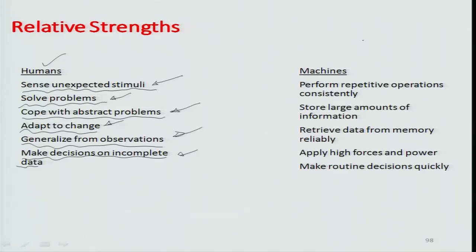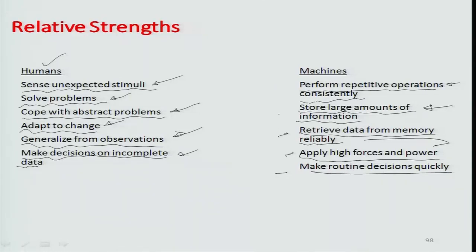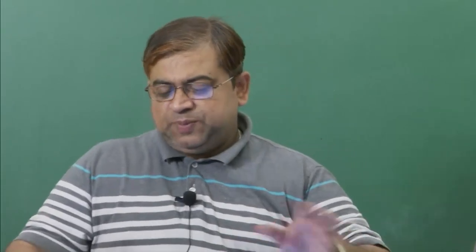When we talk about machine strengths, the biggest strength is that machines perform repetitive operations consistently. In powered mode, they distribute power in a particular manner for task repetition, can store large amounts of information, retrieve data reliably, apply high forces and power, and make routine decisions quickly. The idea behind designing a worker-machine system is to combine the relative strengths of each, so that there is a correct mapping between human and machine capabilities.